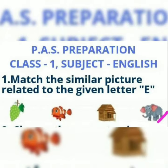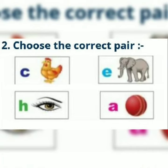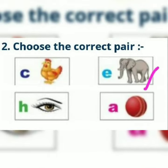Yes, E for elephant is the right answer. Second is choose the correct pair. We have C for hen, H for eye, E for elephant and A for ball. So E for elephant is the correct pair.